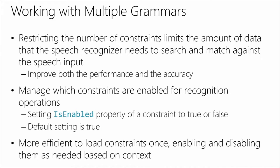You cannot combine open dictation and phrase lists, but you can have multiple phrase lists and multiple grammar constraints using SRGS. It's easy to create a grammar from a phrase list or an SRGS file, add it to a constraint, and add your constraint to the recognizer's collection. Each constraint has an 'is enabled' property, so you can simply turn it on or off to activate the grammar you need based on context.